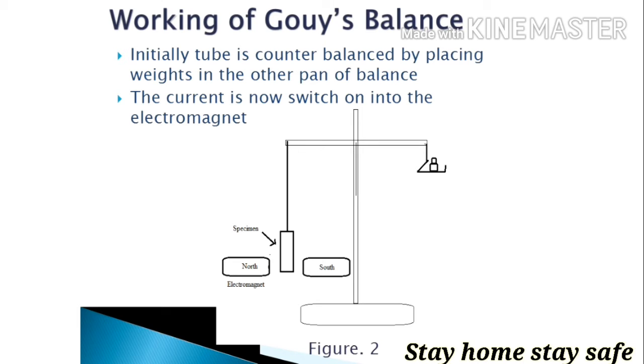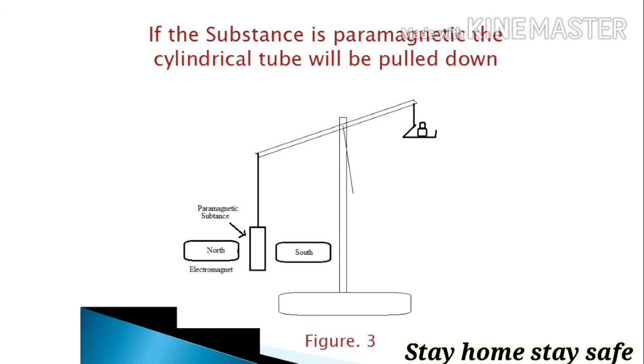Then we start electric current through the electromagnet. As the electric current starts into the magnet, magnetic field is developed around the capillary tube.